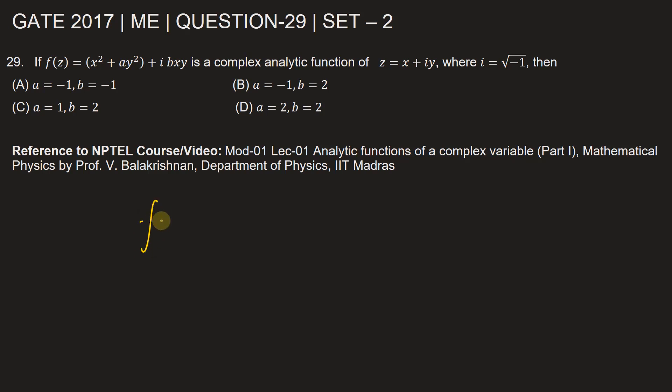In the problem it's given that f of z which is equal to x squared plus a y squared, the real part, plus the imaginary part b x y, is an analytic function. Here we can write the real part as u and the imaginary part as v.